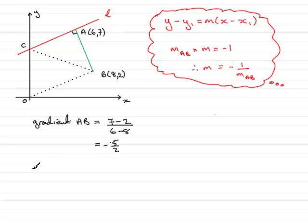And that means that therefore the gradient of L is going to equal negative the reciprocal of this gradient. So in other words, all you need to do is change the sign and turn this upside down. So you've got essentially a gradient of 2 fifths.